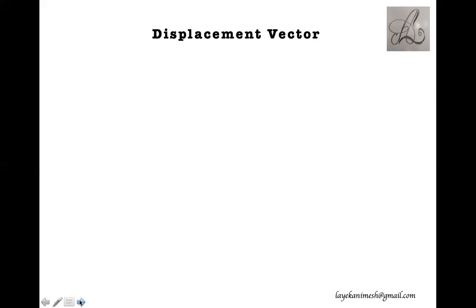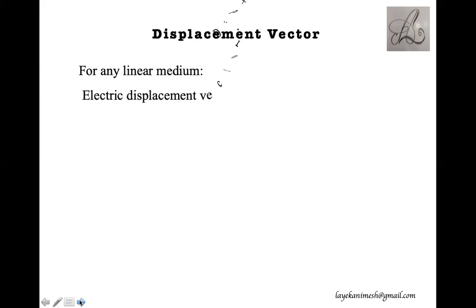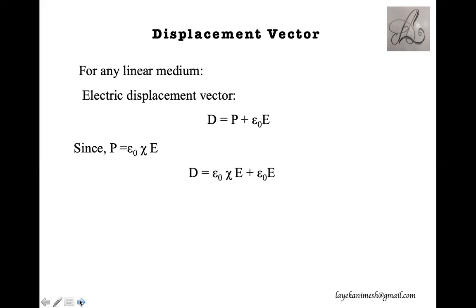We should know about the displacement vector. The displacement vector represents the total electric flux of any dielectric medium. For any linear medium, the electric displacement vector D equals P plus epsilon naught times E, where P is the polarization vector and E is the applied electric field. Since P equals epsilon naught times chi times E, where chi is the susceptibility.